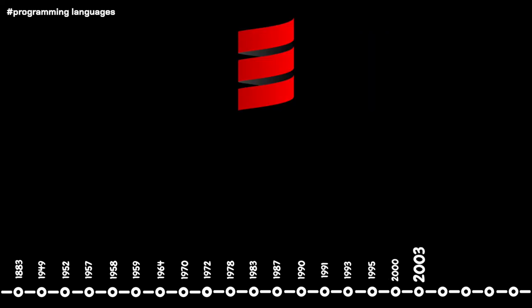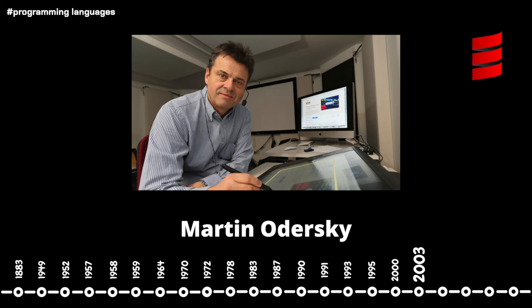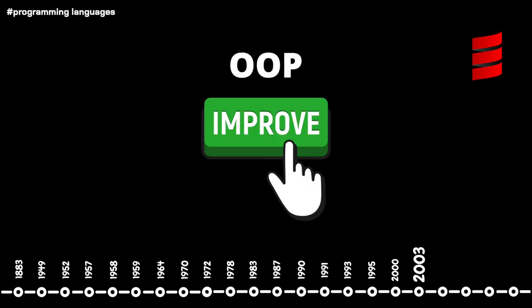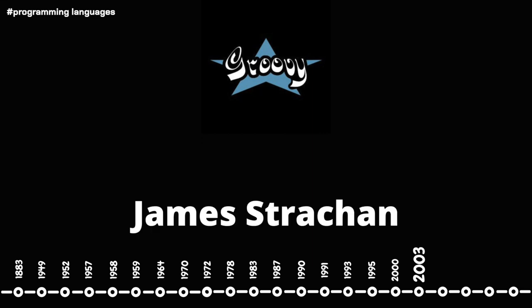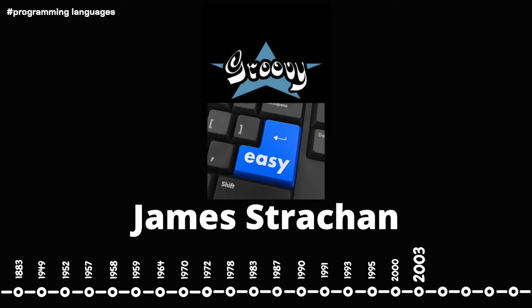In 2003, Scala was created by Martin Odersky, to combine mathematical functional programming with object-oriented programming. Scala was focused around being concise and improved upon many criticisms of the object-oriented language Java. Also in 2003, a language called Groovy was created as an improvement of Java, created by James Strachan. Groovy is favored by some developers because of its relative simplicity when it comes to learning.